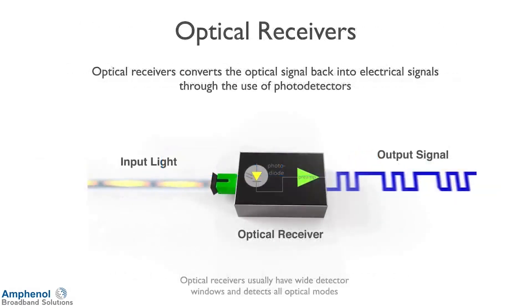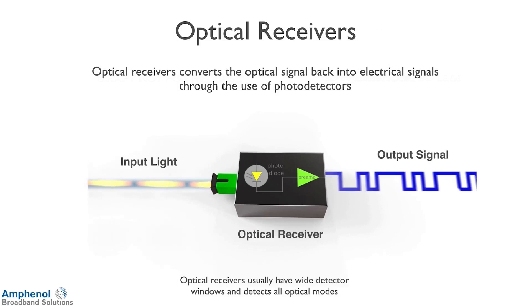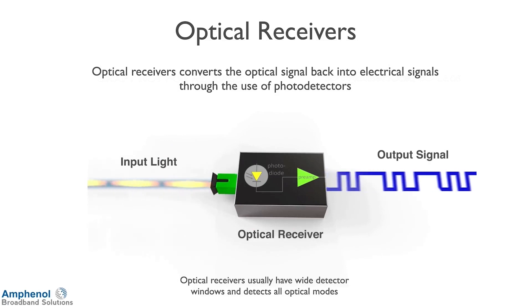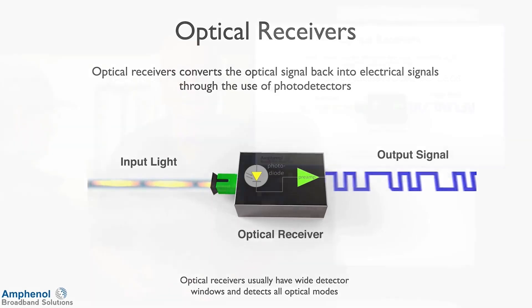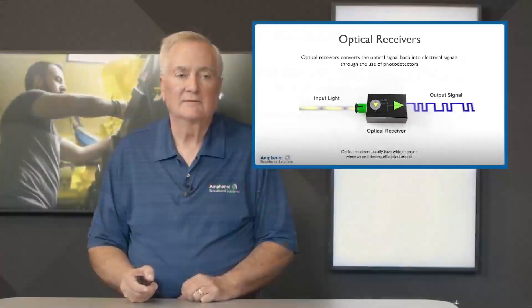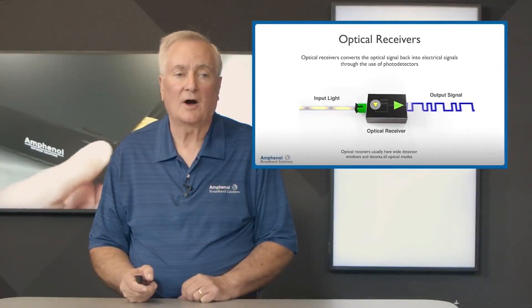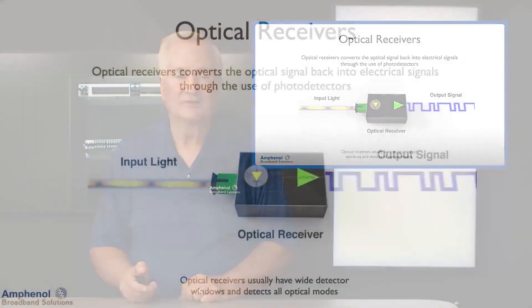The optical receivers convert the optical light back into electrical signals through the use of photodetectors. Optical receivers usually have wide detector windows and detect all optical modes.